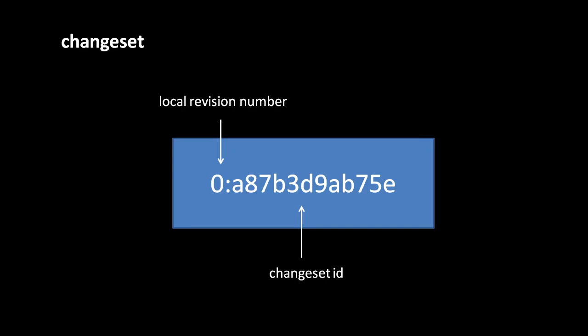In the terminology of Mercurial, the revisions, the snapshots within a repository, are usually known as change sets. Each time you check in your code from the working directory, you're creating a new change set.